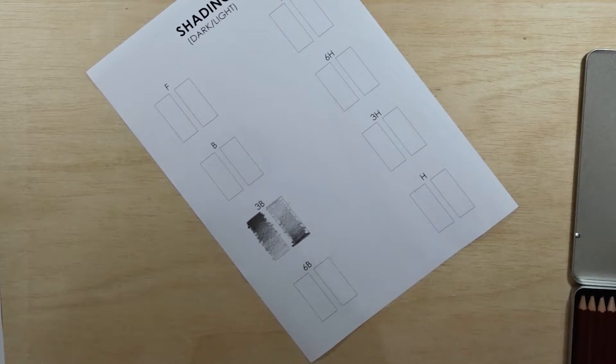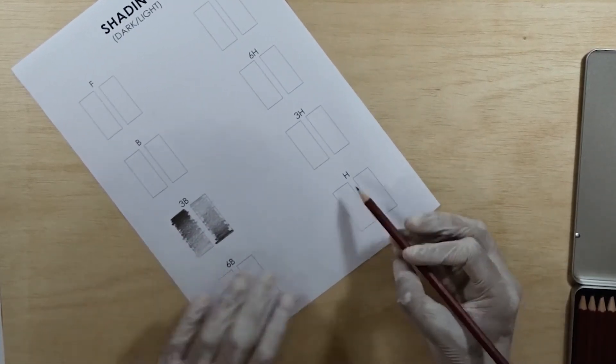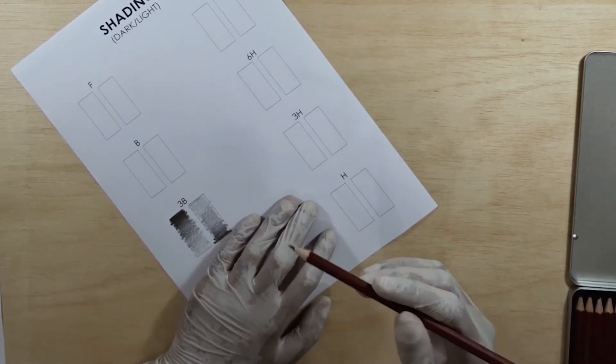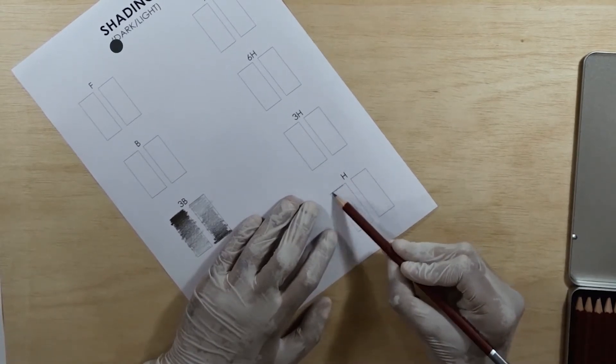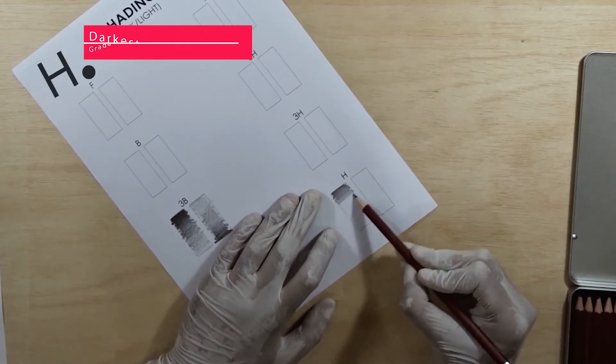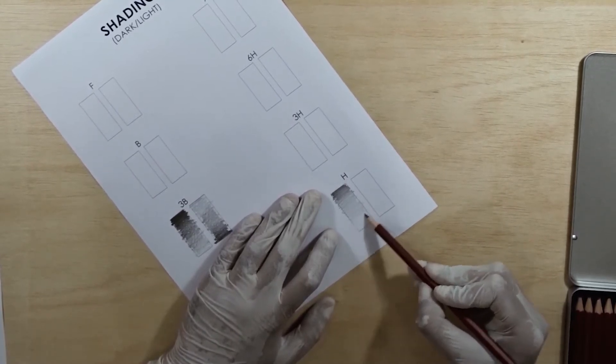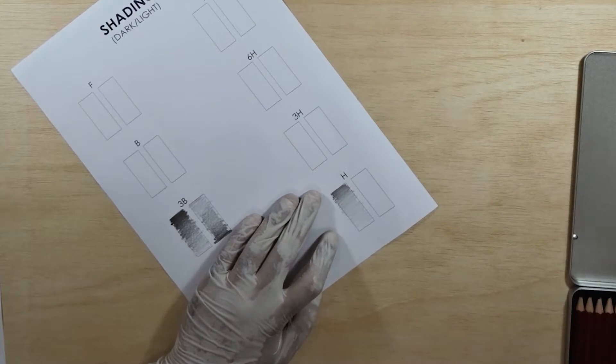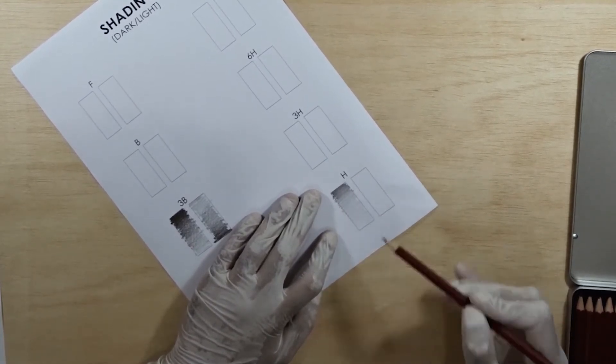So let me show you one more example with the H pencil. Here's the H box. It's a hard pencil again, it will rip off the paper if you press it too hard. So that's it, from dark to light. And now we will go from light to dark here.